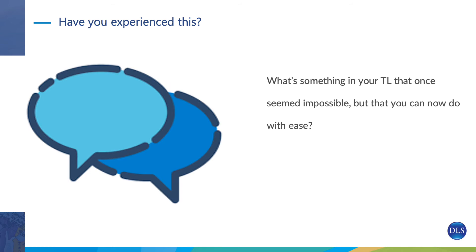Have you experienced something in your target language that once seemed impossible but now you can do with ease? For example, the word 'Mecidiyeköy' — a neighborhood in Istanbul — was once impossible for me to pronounce when I lived in Turkey, but after time it became easy and I could say it without thinking: 'Mecidiyeköy'e çalışıyorum.' Think of your own example where something once seemed impossible but now you can do it effortlessly.